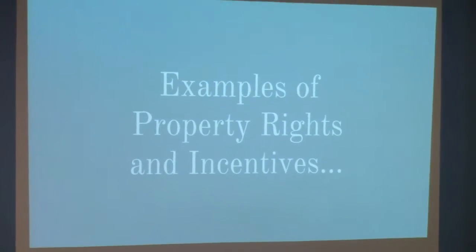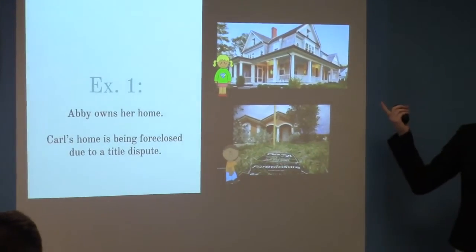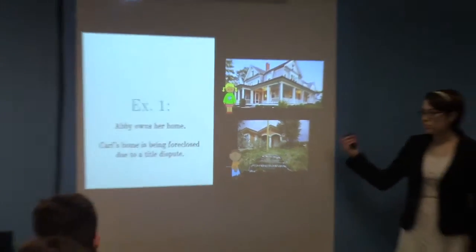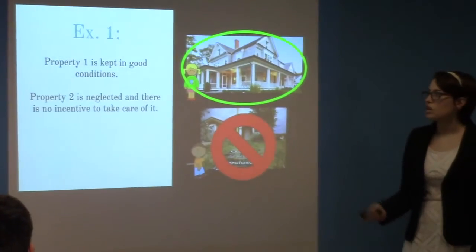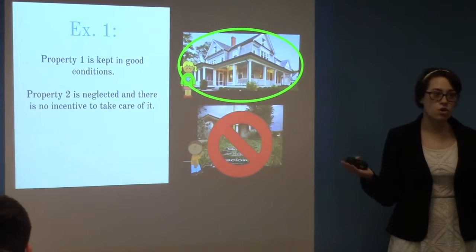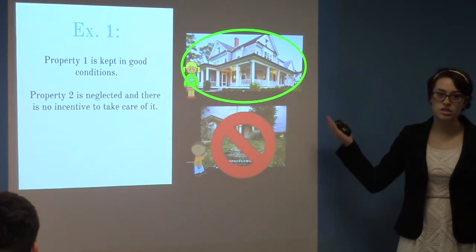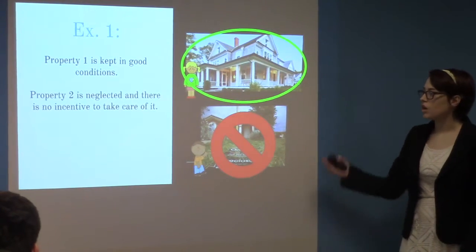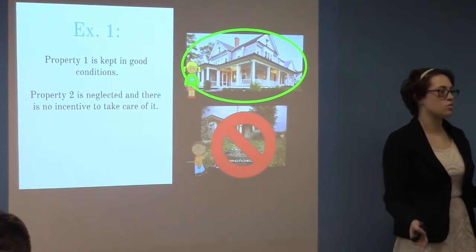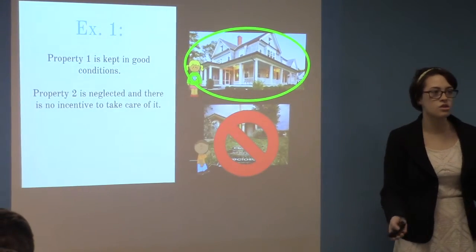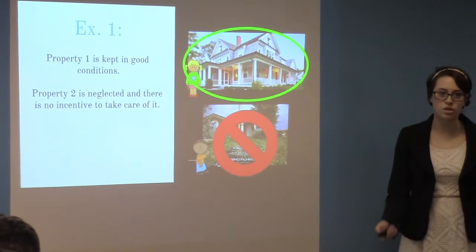Some examples of property rights incentives: Abby owns her own home, while Carl's home is being foreclosed due to a title dispute. Abby has the incentive to take care of her home because it's her own property, so it's kept in good condition. Carl's home is neglected because of the title dispute — nobody really knows whose home it is, so there are no property rights over it and it ends up being foreclosed.